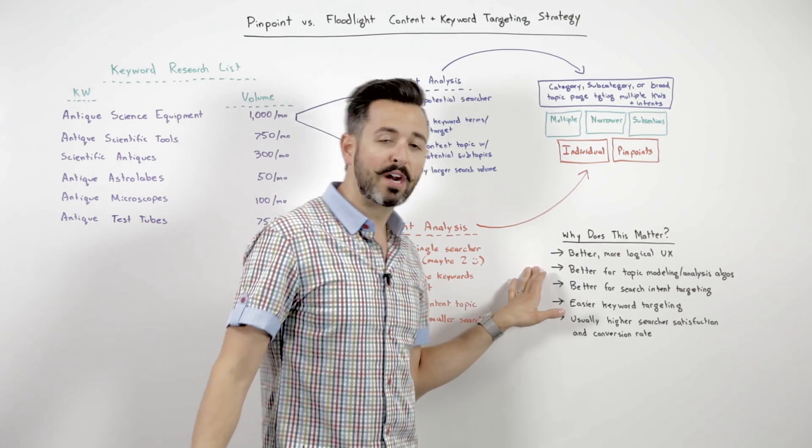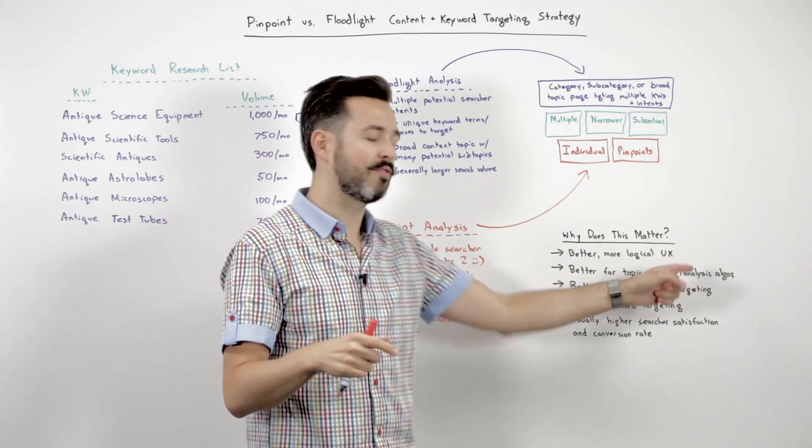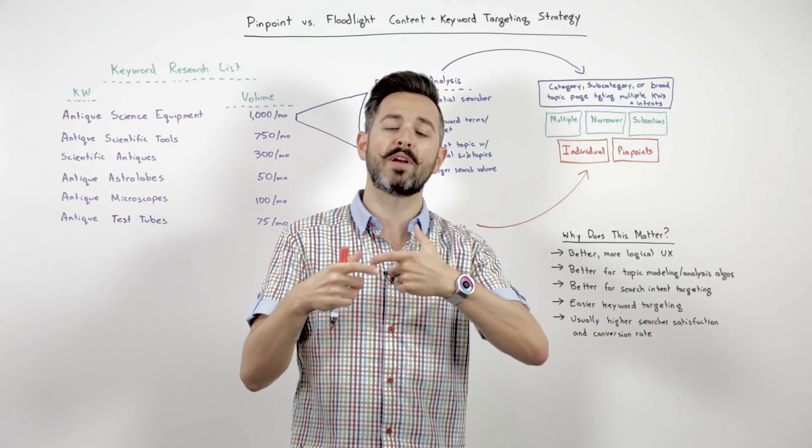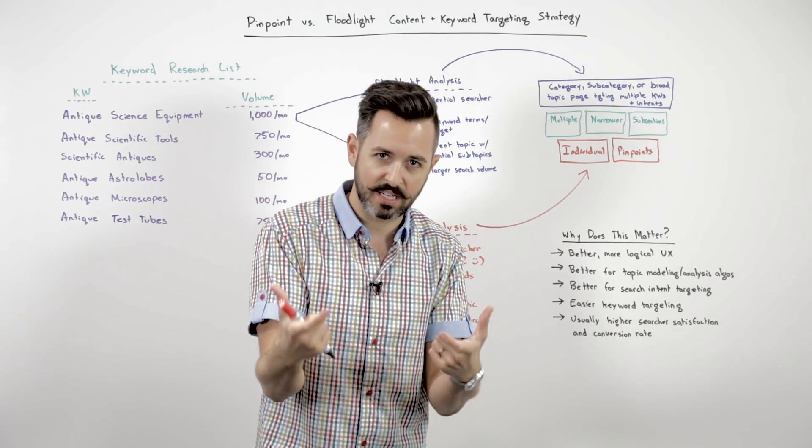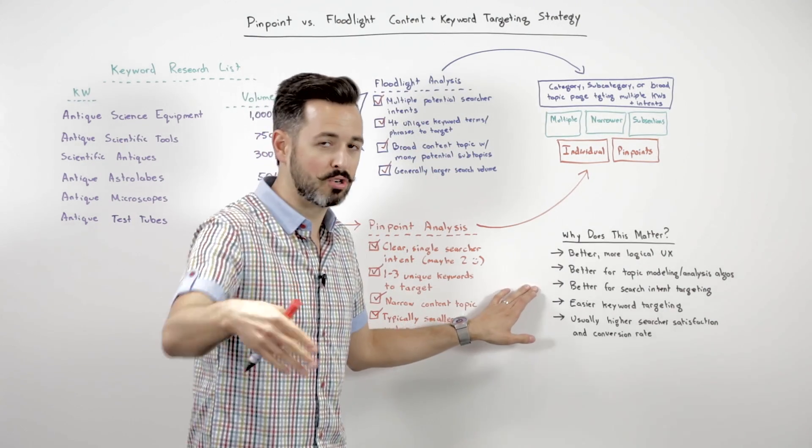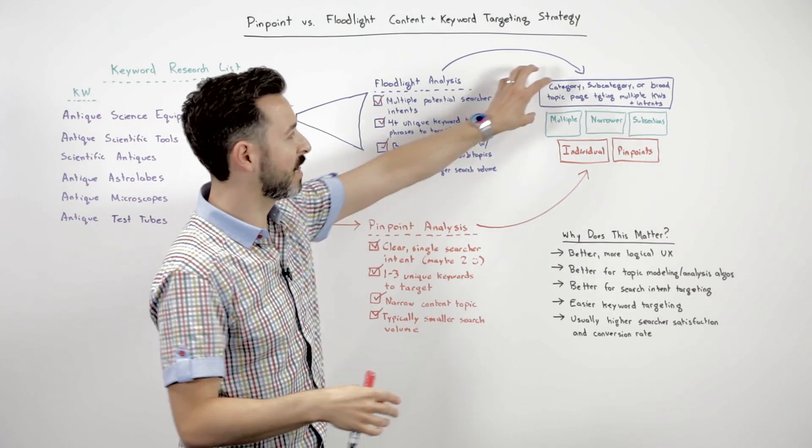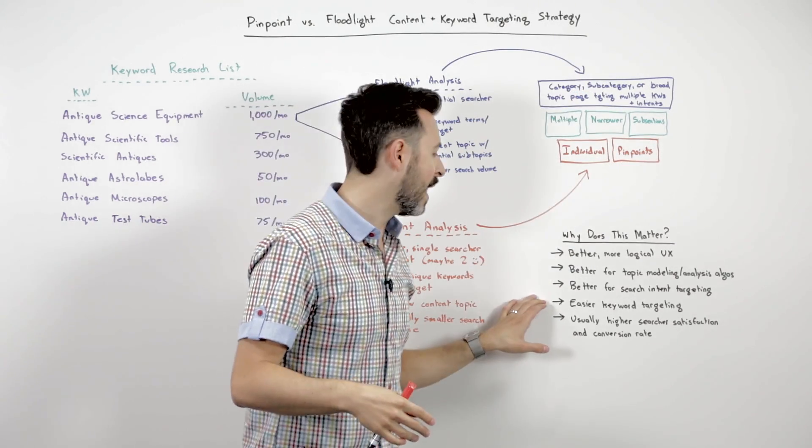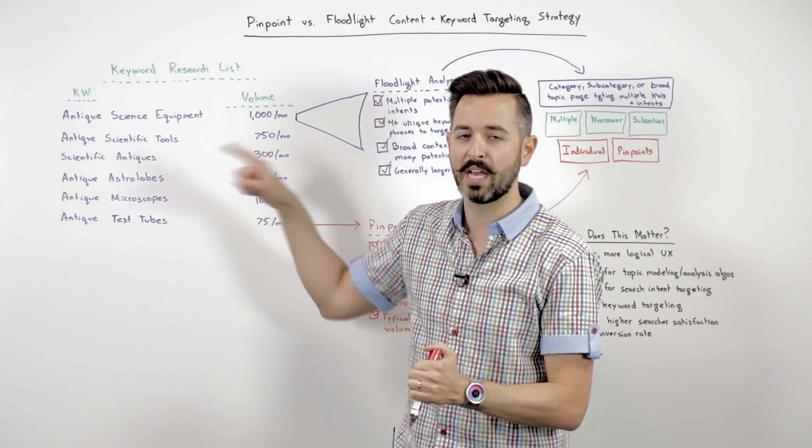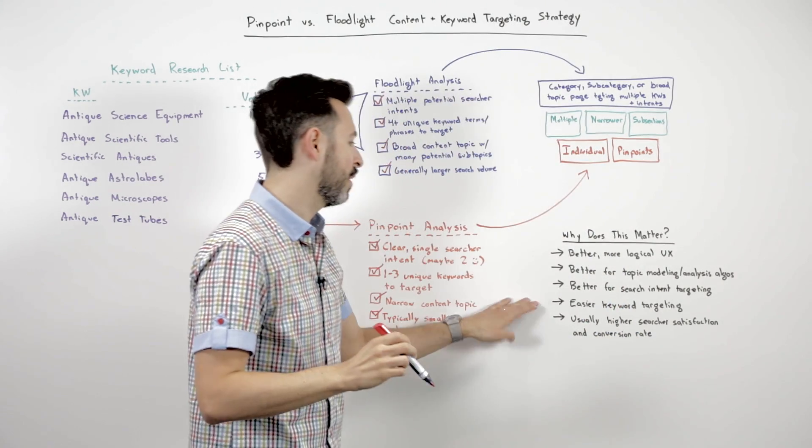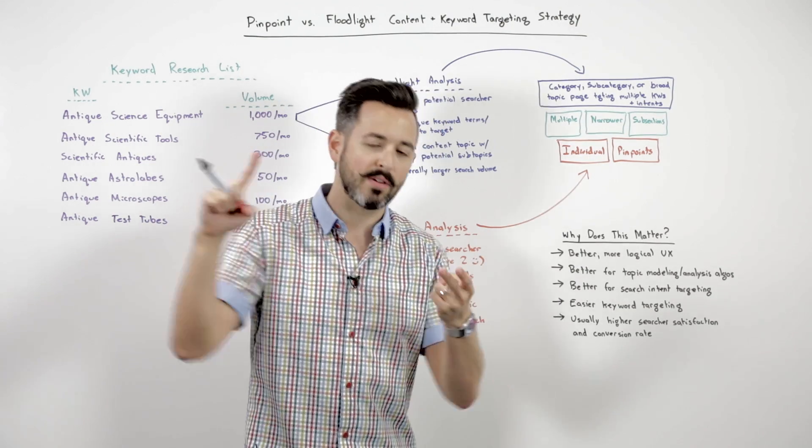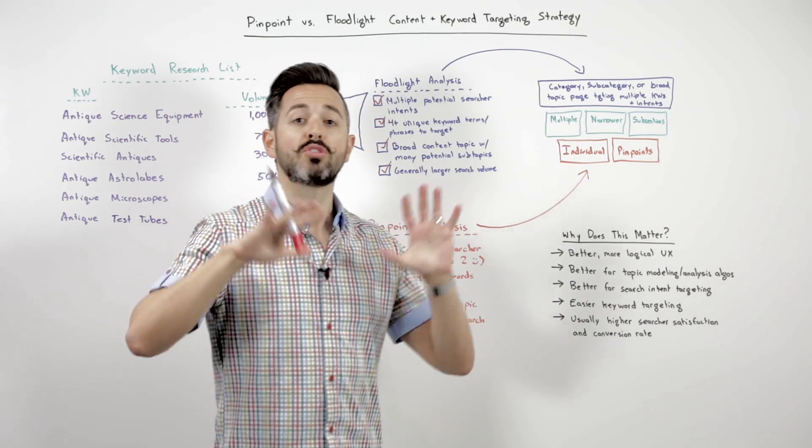It's better for topic modeling analysis and for all of the algorithms around things like Hummingbird, where Google looks at, are you using the types of terms and phrases? Do you have the type of architecture that we expect to find for this keyword? It's better for search intent targeting because the searcher intent is going to be fulfilled if you provide the multiple paths versus the narrow focus. It's easier keyword targeting for you. You're going to be able to know, I need to target a lot of different terms and phrases and variations in floodlight and one very specific one in pinpoint. And there's usually higher searcher satisfaction, which means you get lower bounce rate, more engagement, usually a higher conversion rate. So it's good for all those things.